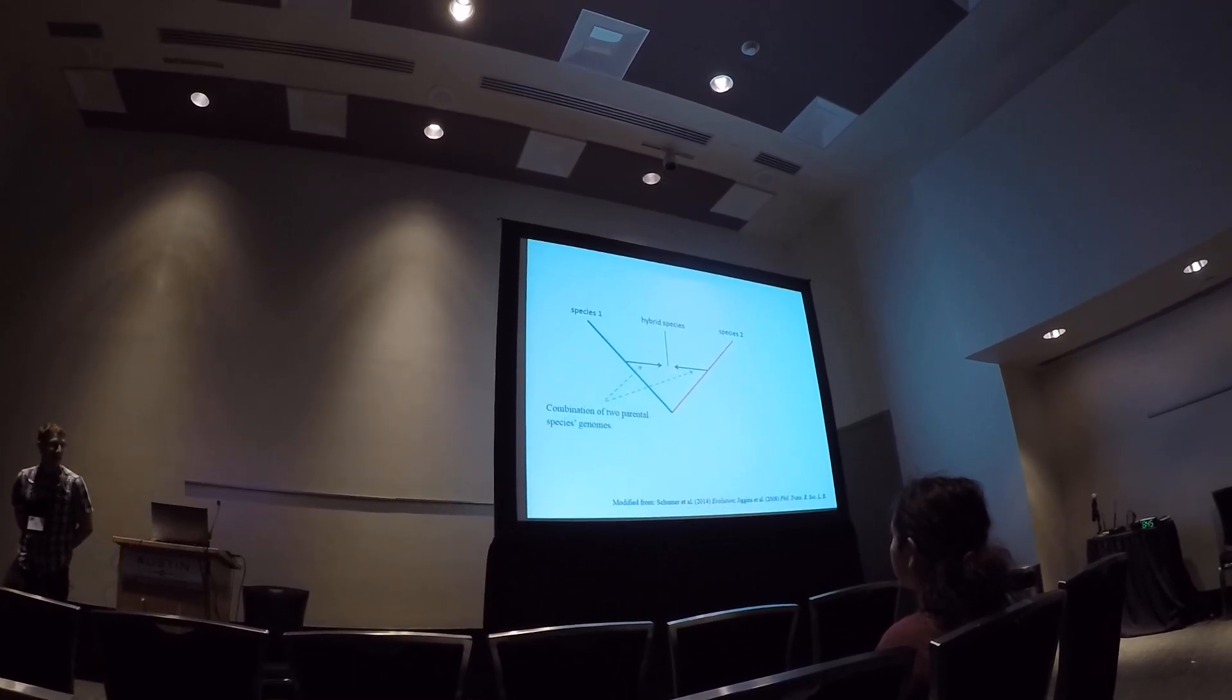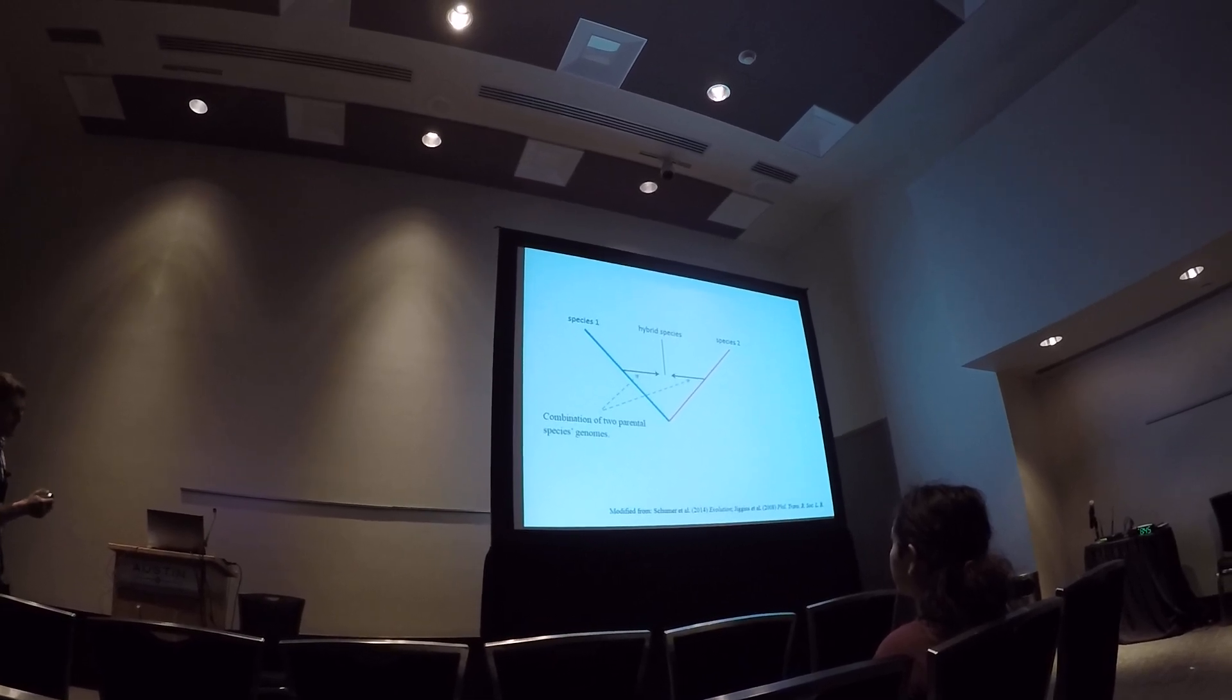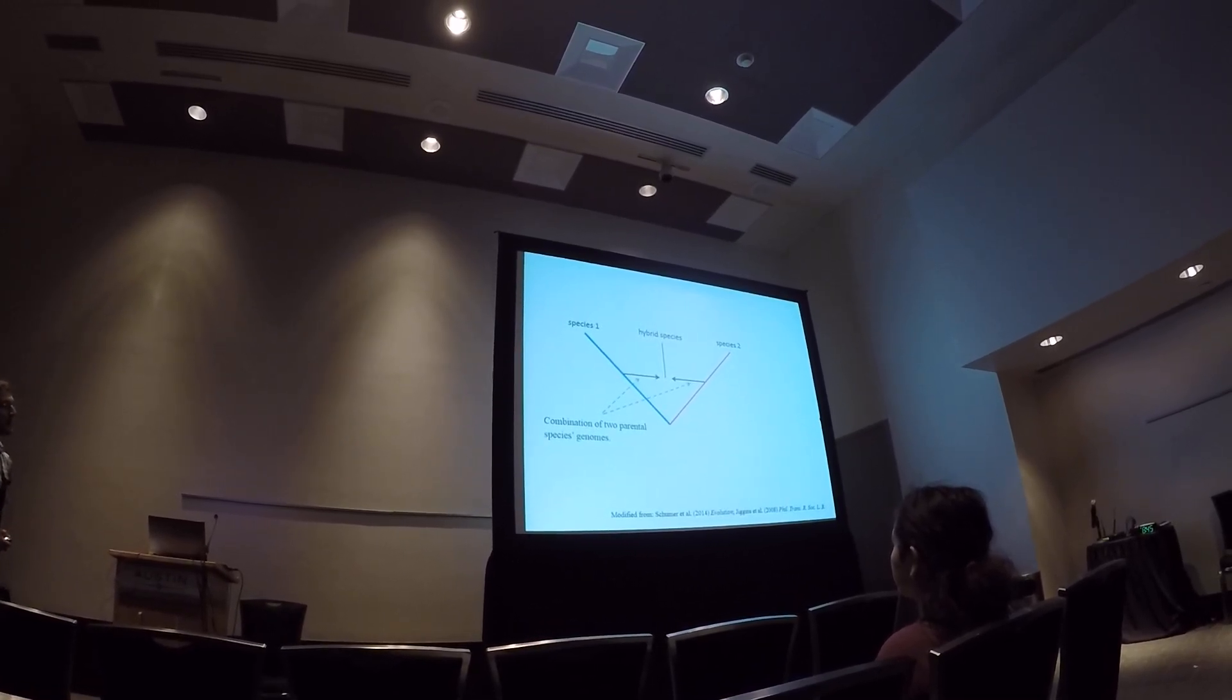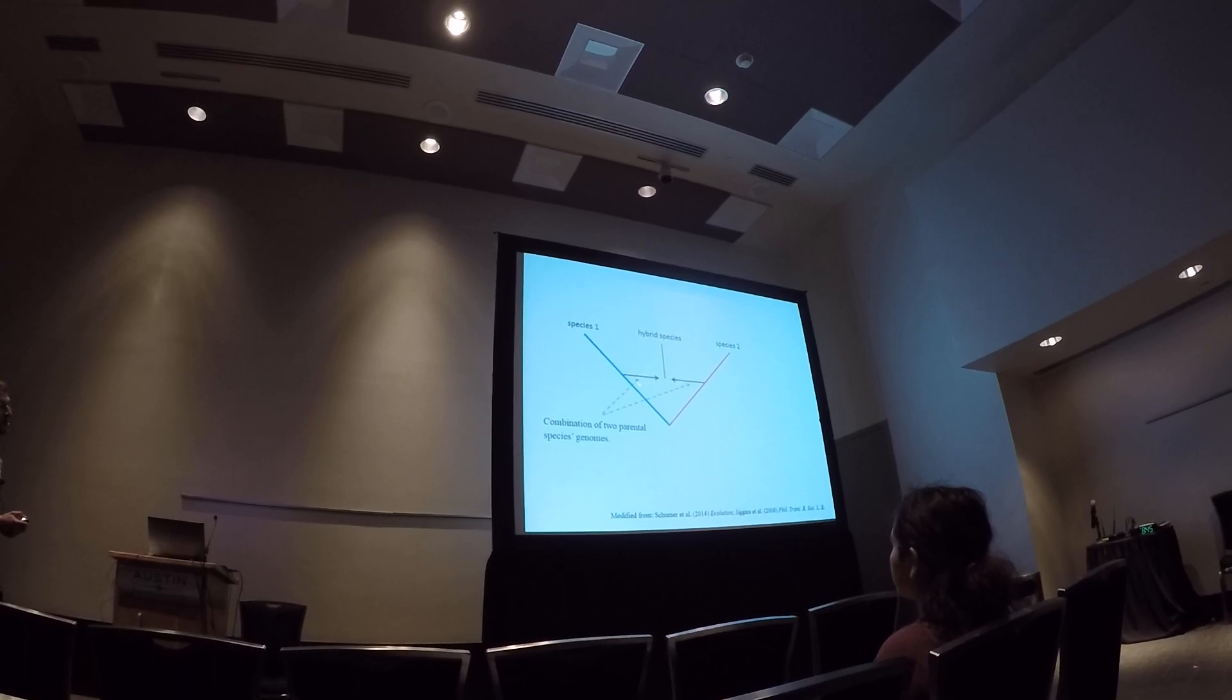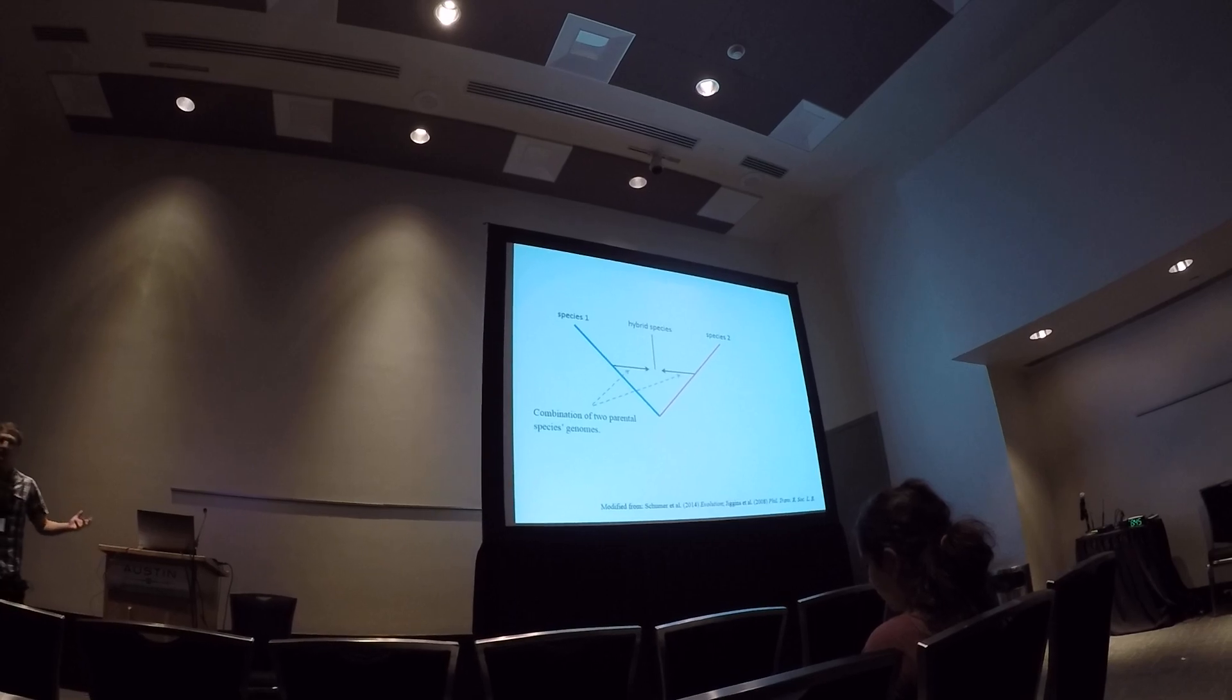And if we think about this schematically, we can imagine two species or lineages shown here in blue and red, and at some time point they hybridize, producing a new population where individuals have a mixture of ancestry in their genome.